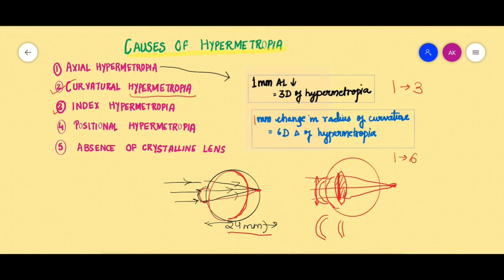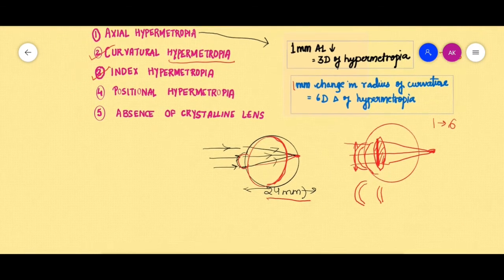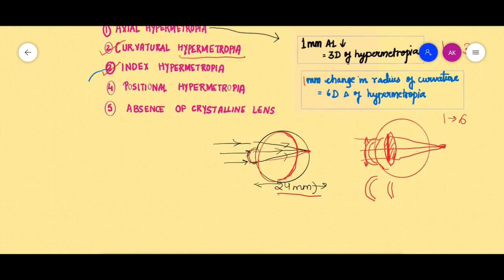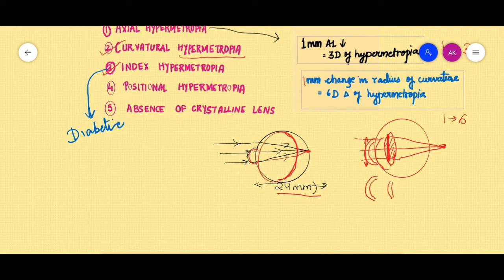Next, coming to what is meant by index hypermetropia. Index hypermetropia is a term which we use basically in diabetes, in diabetic patients.